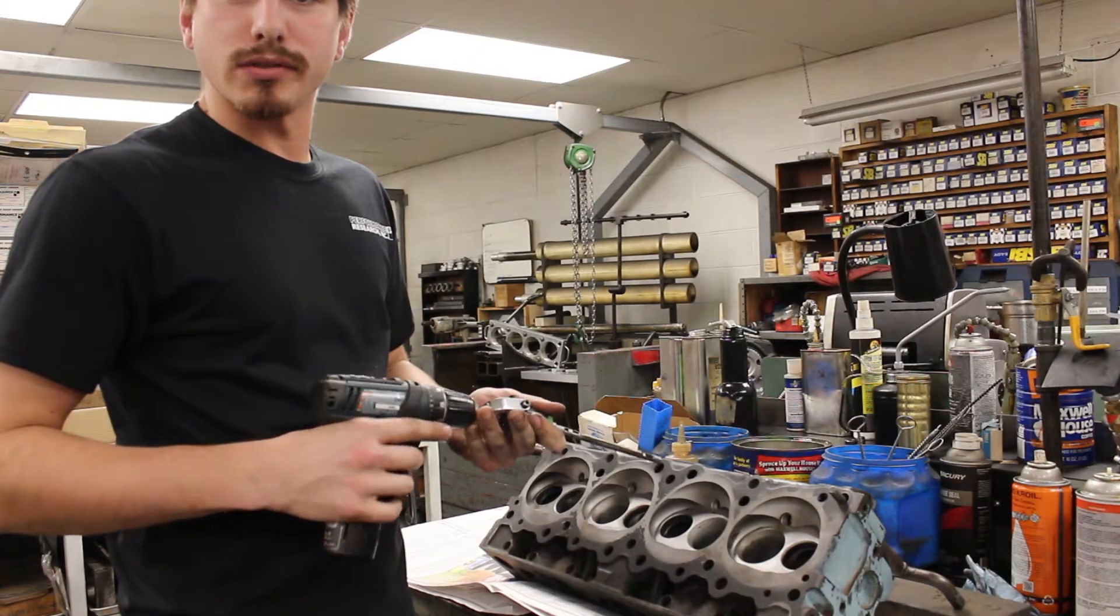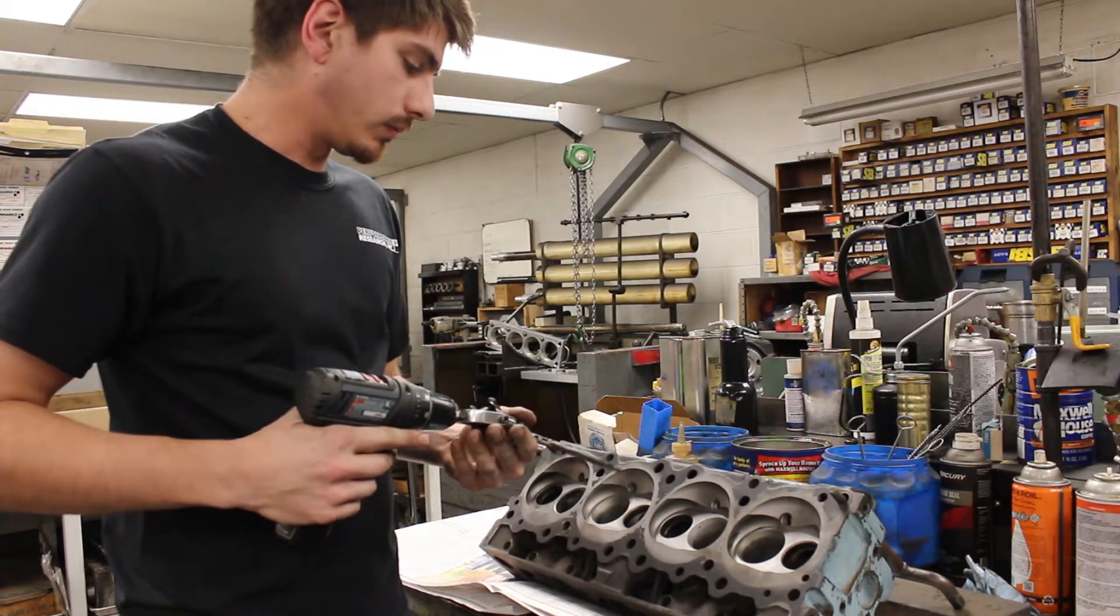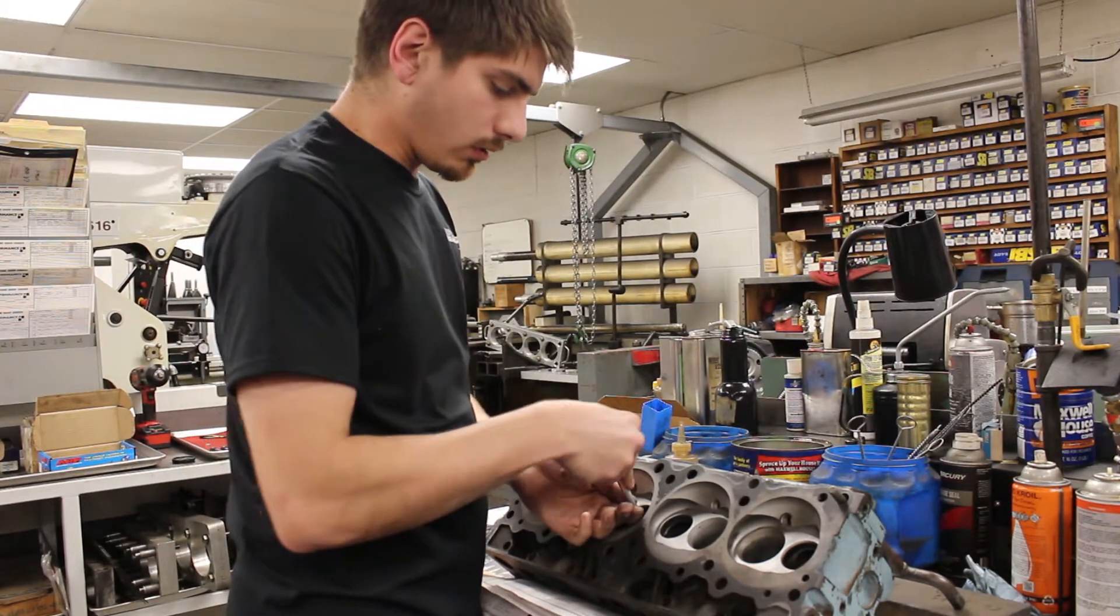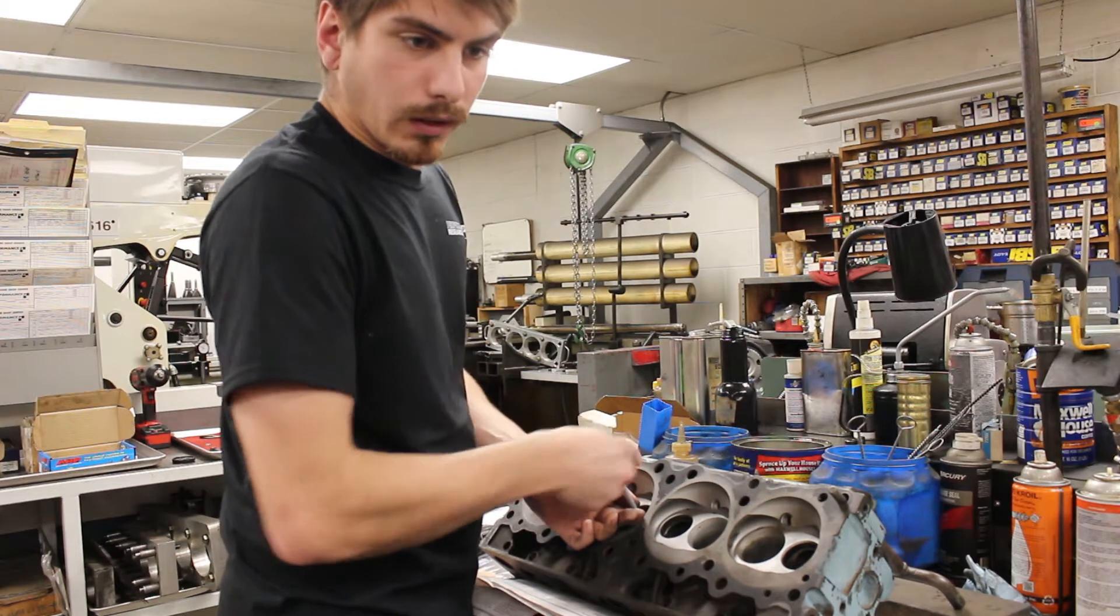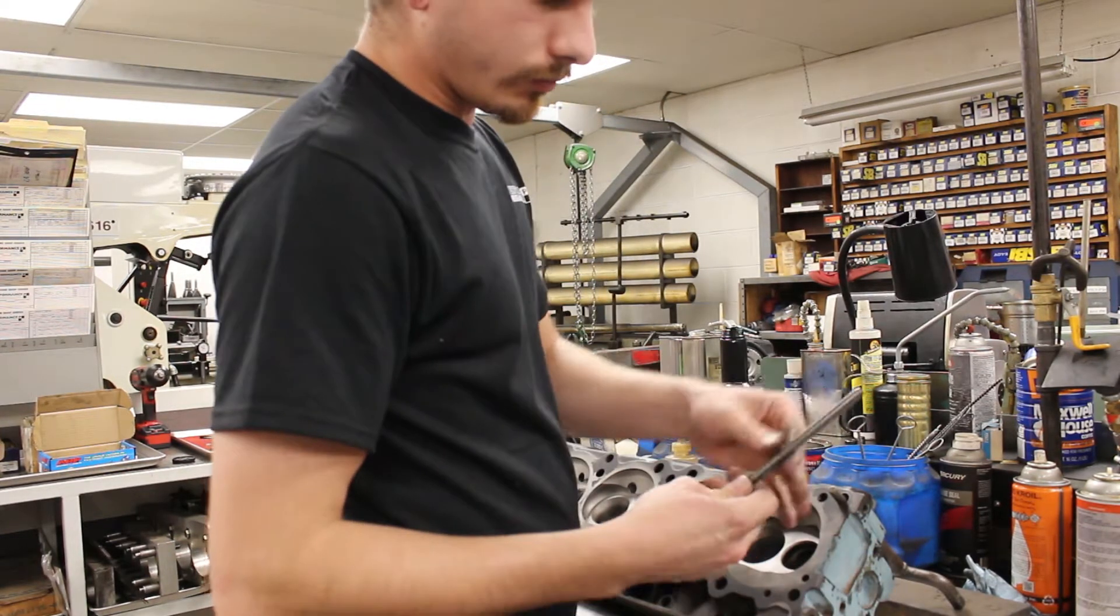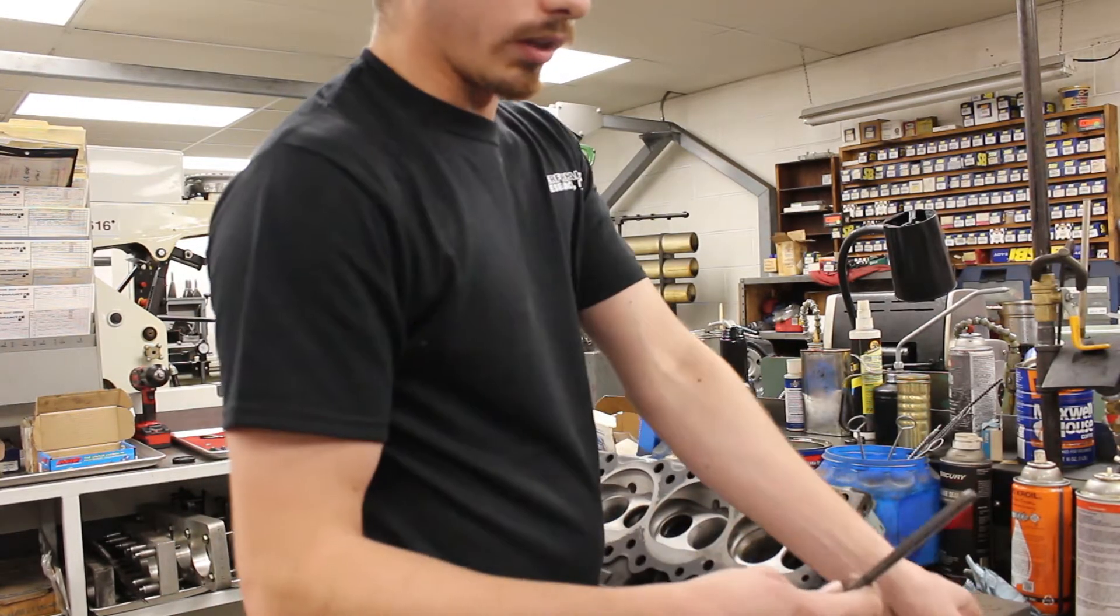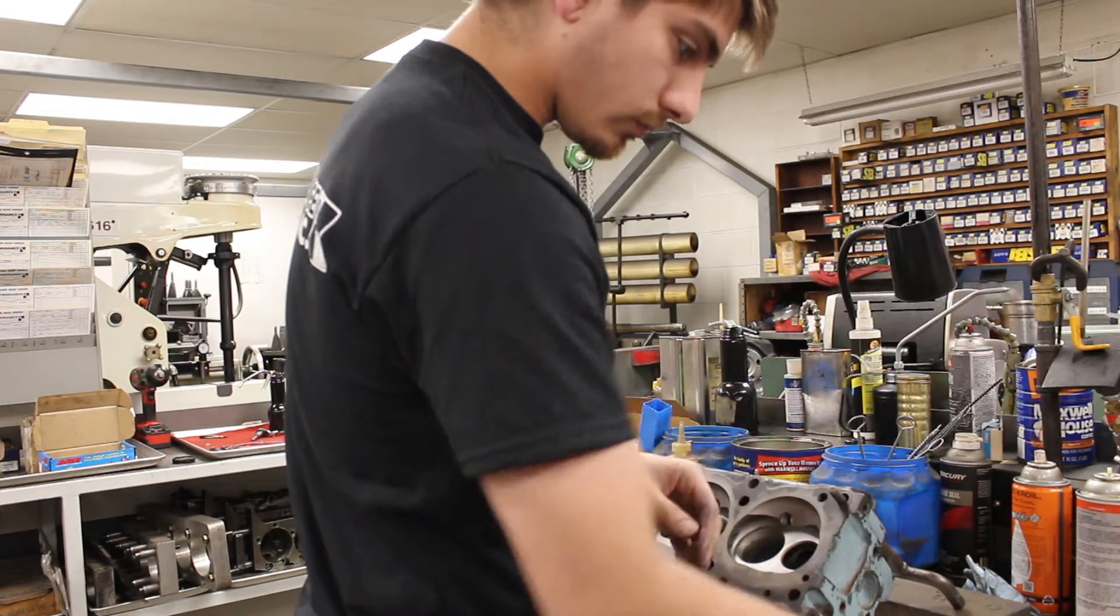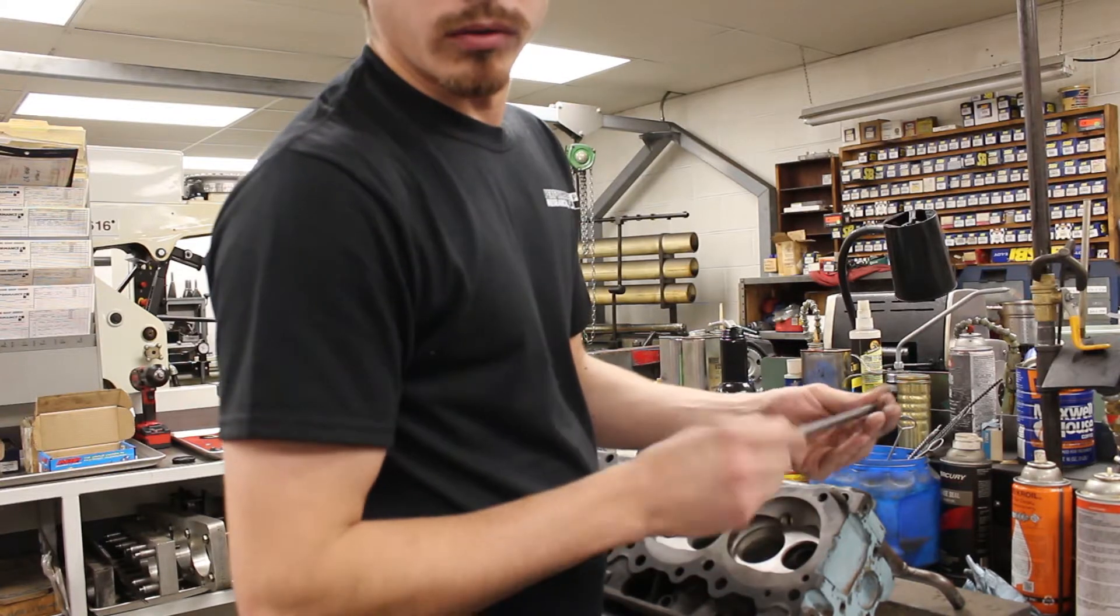We are honing the guides that we just installed and trimmed with our Goodson Diamond Hone. They are tight, it's pretty typical, they shrink a little when you press them in. I've got one pilot that does exactly the diameter of the valve and one that's slightly larger that's going to give us the clearance we want, the oil clearance. Once our larger pilot goes through nice and smooth, then we're done.